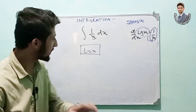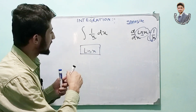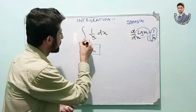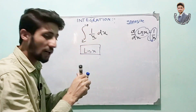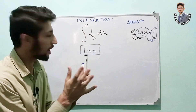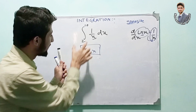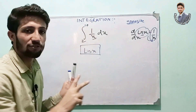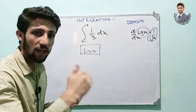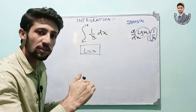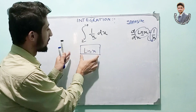Now what if I say I am integrating this value from 2 to 10? This becomes a closed interval. Closed interval means we are integrating from some value to some value — from a lower limit to an upper limit. That is what a closed interval means.